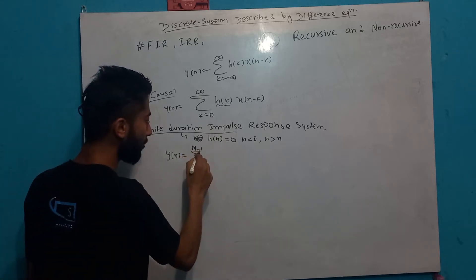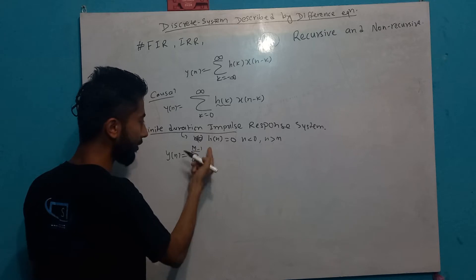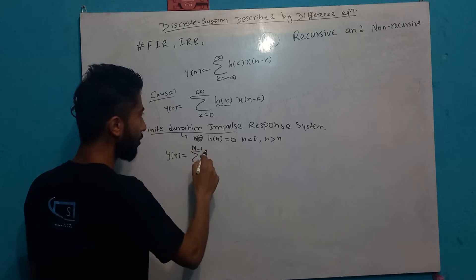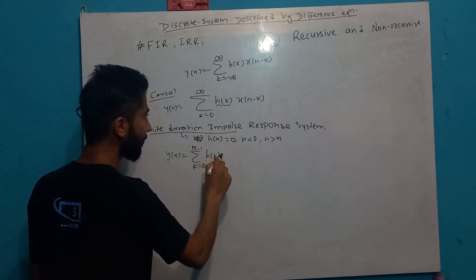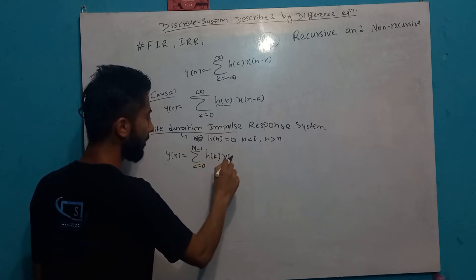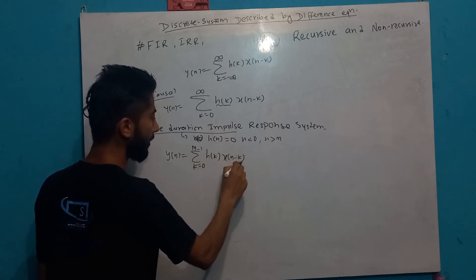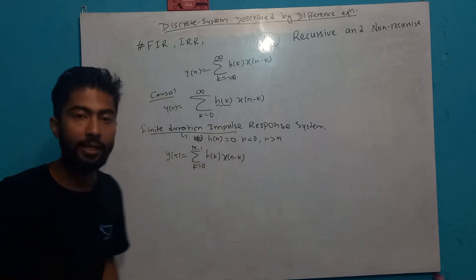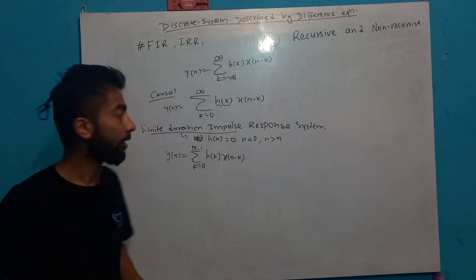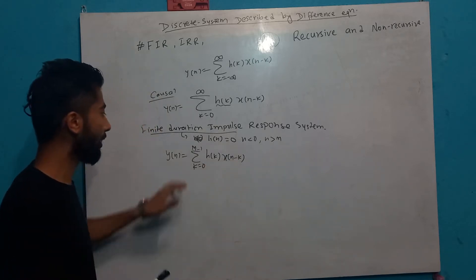And from 0 to N minus 1, the convolution y[n] = summation of x[k] · h[n-k] gives us the finite duration impulse response.